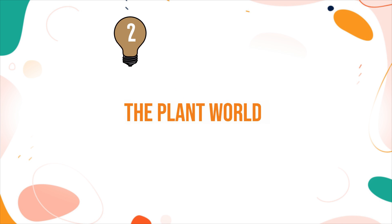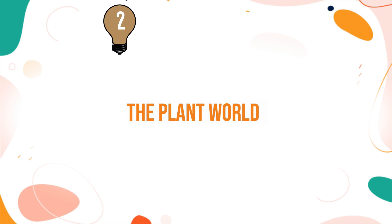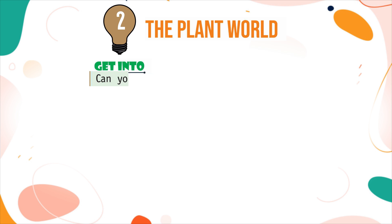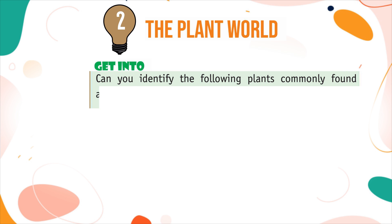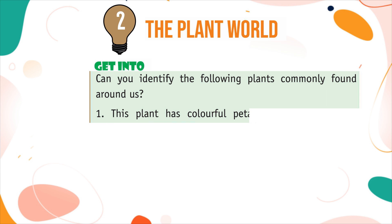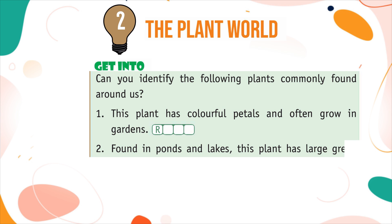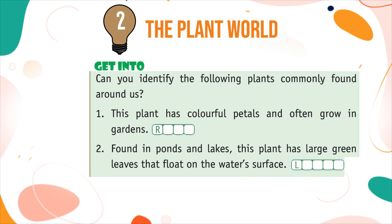Chapter 2: The Plant World. Can you identify the following plants commonly found around us? This plant has colourful petals and often grows in gardens. Found in ponds and lakes, this plant has large green leaves that float on the water's surface.